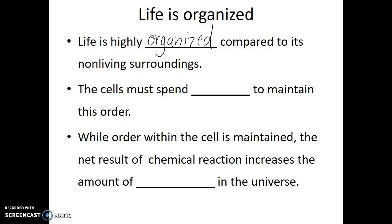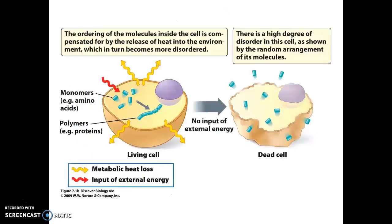In order for life to stay organized, cells must spend energy to maintain this order or organization. While order within cells is maintained, the net result of chemical reactions increases the amount of entropy or disorder in the universe. This also becomes evident because as soon as living organisms stop investing energy in being organized and ordered, they start to decompose. They break down, they lose that order and organization. A living cell must constantly be using energy to maintain its order and organization. But as soon as that cell is dead, it will quickly become disorganized because it's no longer spending energy to maintain its order.